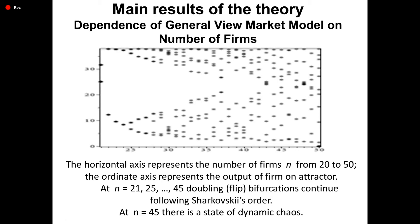Main results of the theory. Dependence of the general view market model on number of firms: the horizontal axis represents the number of firms n from 20 to 50, and the ordinate axis represents the output of the firm on the attractor. At n equals 21, 25, 45, period-doubling flip bifurcations continue following Sharkovsky's order. At n equals 45, there is a state of dynamic chaos.